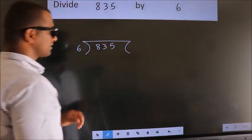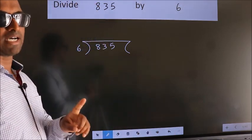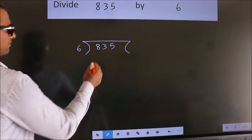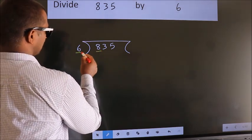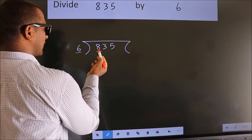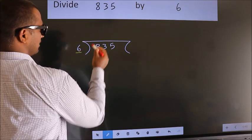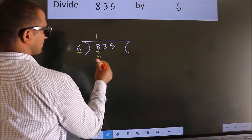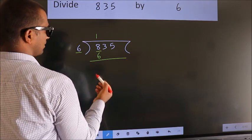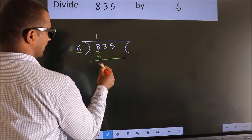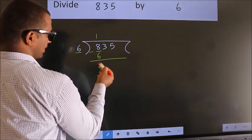This is your step 1. Next, here we have 8, here 6. A number close to 8 in the 6 table is 6×1=6. Now, we should subtract. We get 2.